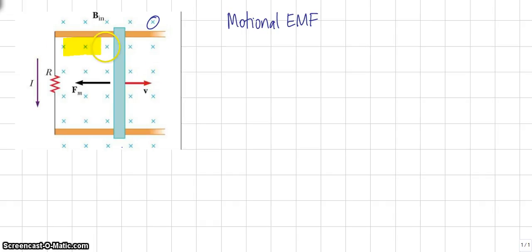If you look at this area right here between the bar and the rails and the resistor, that area is increasing as the bar slides to the right. So therefore, there's a magnetic field through an area and the area is increasing. So therefore, we have an increasing flux.